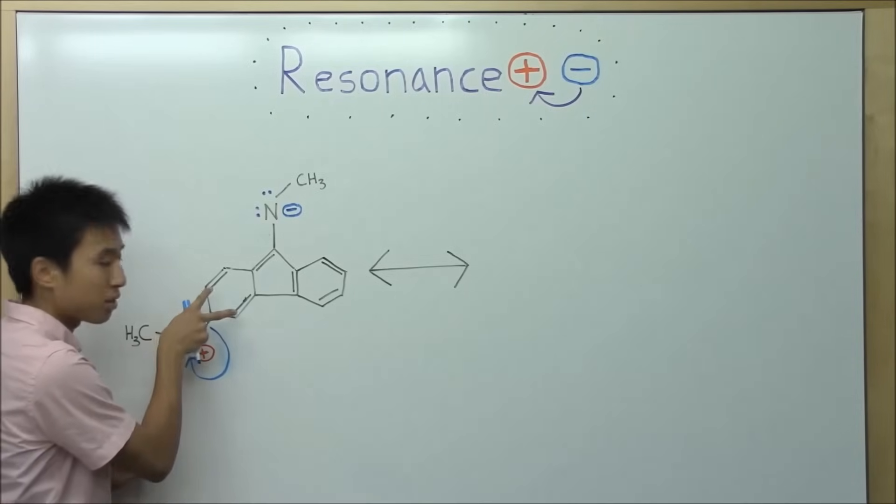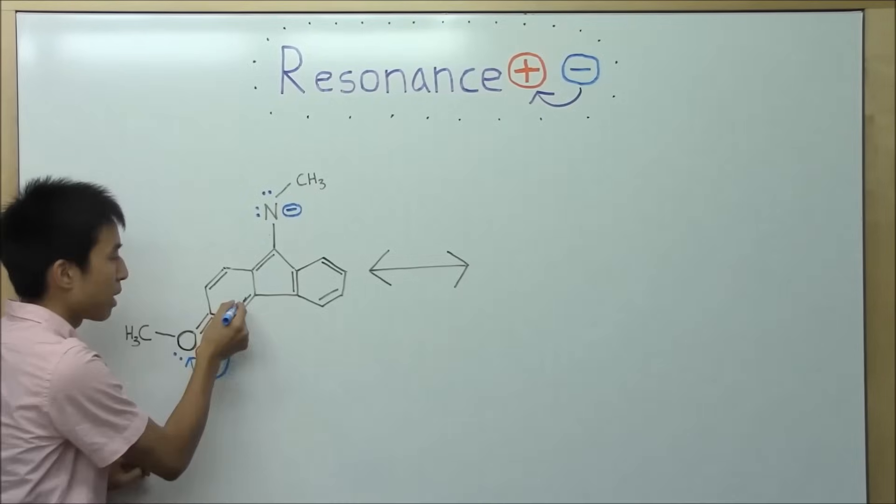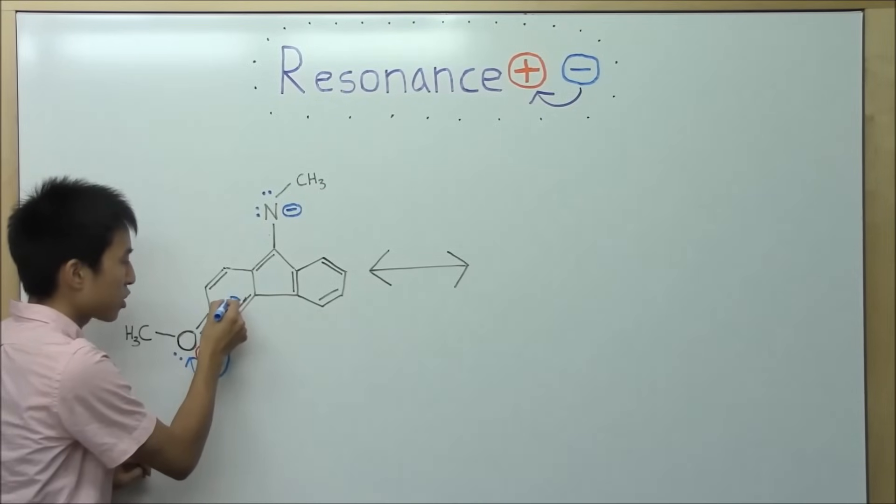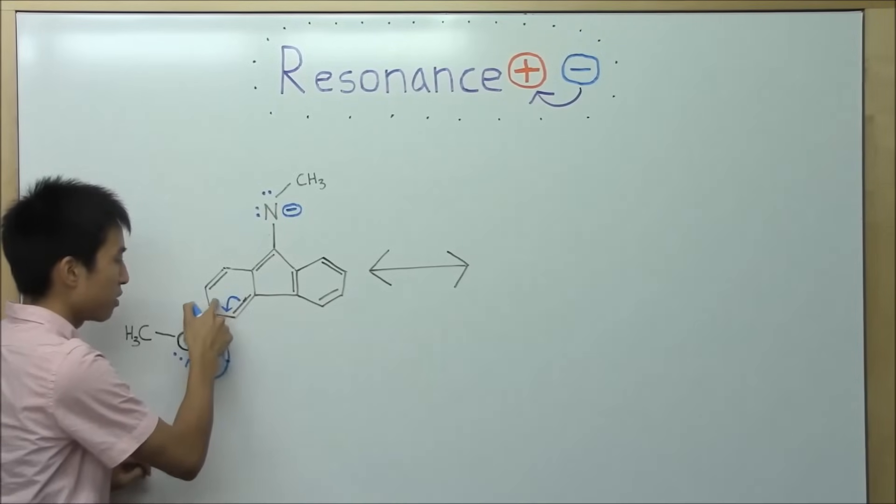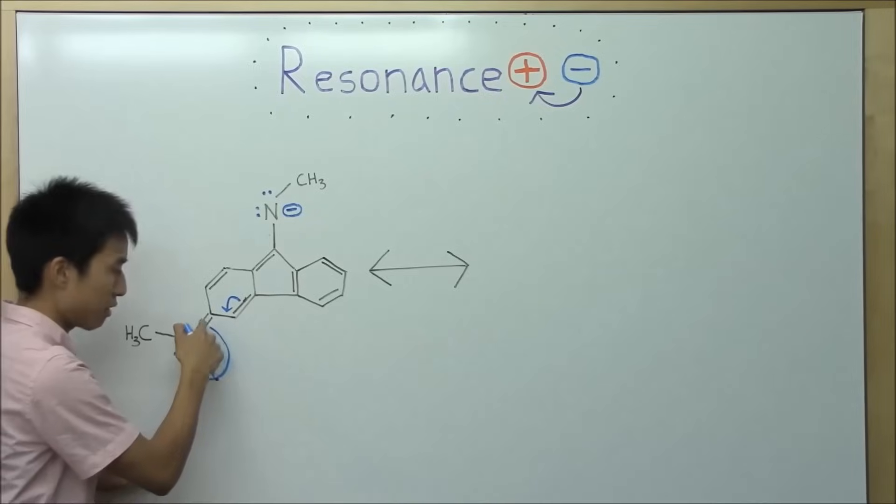Well, either of these double bonds are fine, actually. They can both resonate in. But I'm just going to use the bottom one. So this one can do the same thing. You want to actually point to the bond and not bring it to the carbon that will become positive after this resonance.